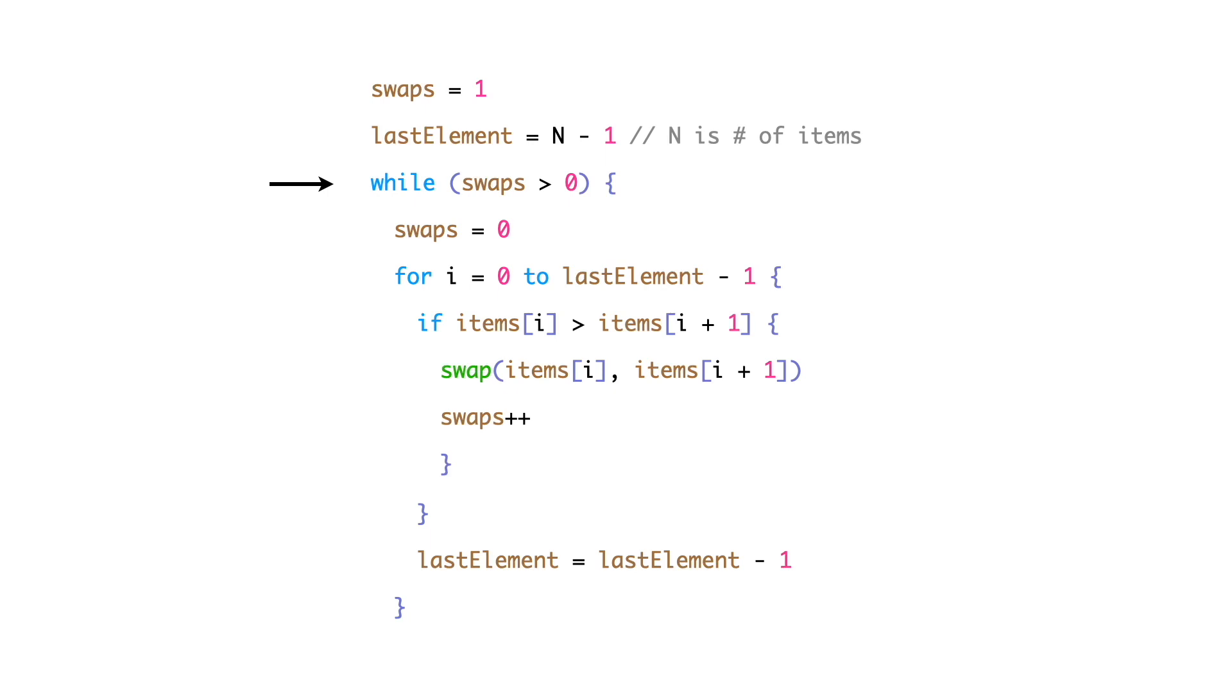The while loop runs as long as there is at least one swapping. After initializing both the variables, we will enter into the while loop.